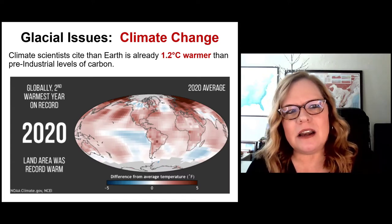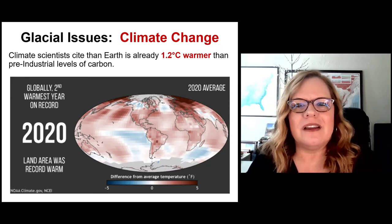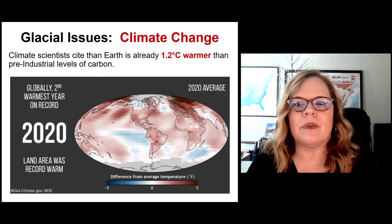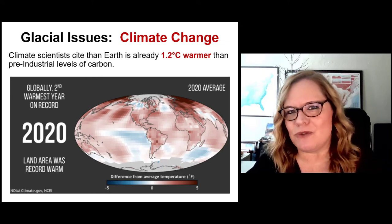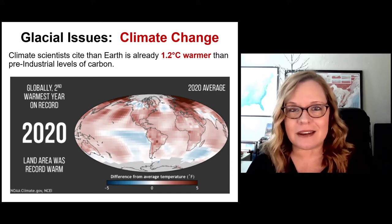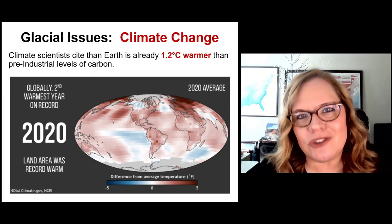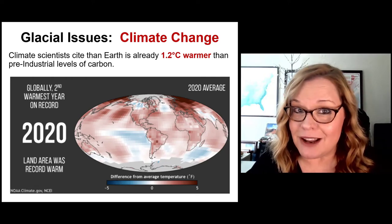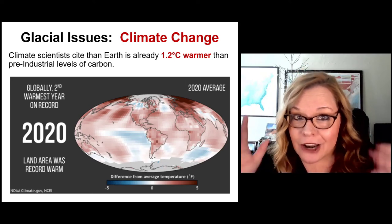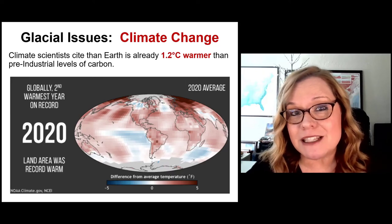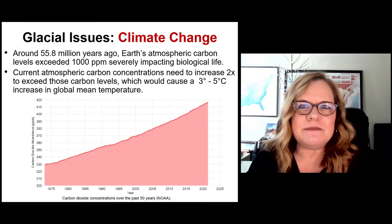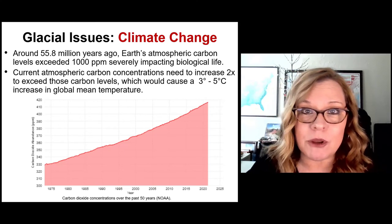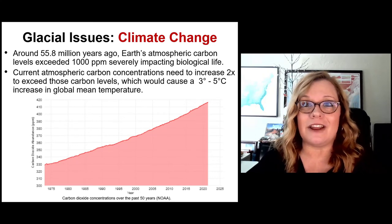Climate scientists cite that the Earth is already 1.2 degrees Celsius warmer than pre-industrial levels. In 2020 it was the second warmest year on record since we've been measuring temperature scientifically. The key is when it causes glaciers to melt — because glaciers link back to Earth's reflectivity or albedo, and less reflected surface means more solar radiation absorbed, making temperatures hotter. Around 55.8 million years ago, the worst global warming event on record happened — well before any known fossils of hominoids existed.